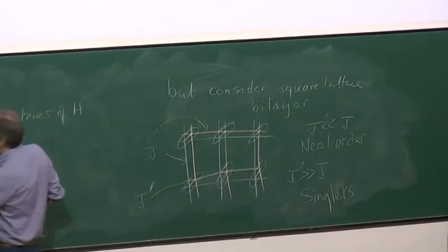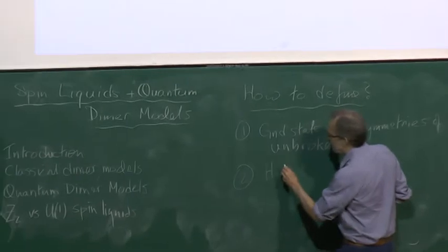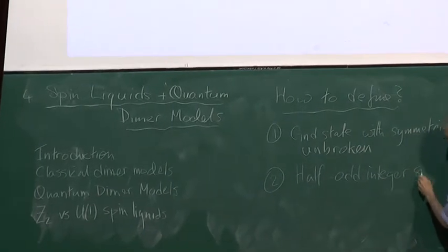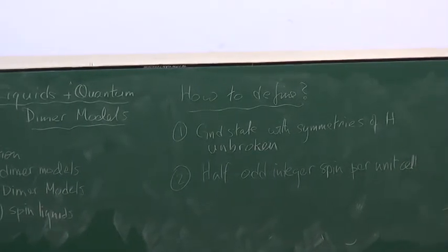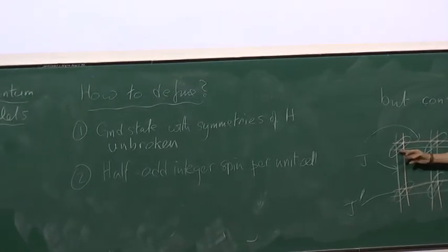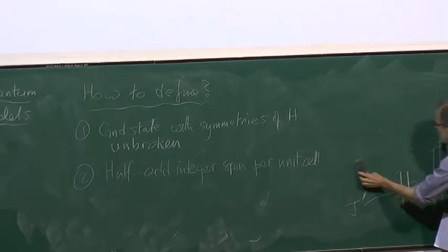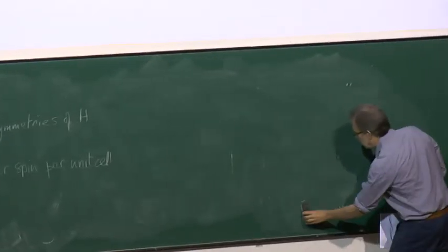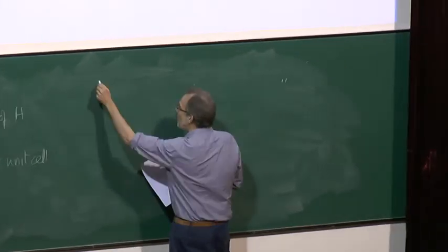This singlet state doesn't break any symmetry, satisfying our first condition, but we hardly want to call it a spin liquid — if you got this model from a Hubbard model, you could imagine changing parameters continuously to an ordinary band insulator. So it's often useful to have extra conditions. A second condition is to have half-integer — or more generally half-odd-integer — spin per unit cell, which would exclude this bilayer example since we have integer spin per unit cell overall.